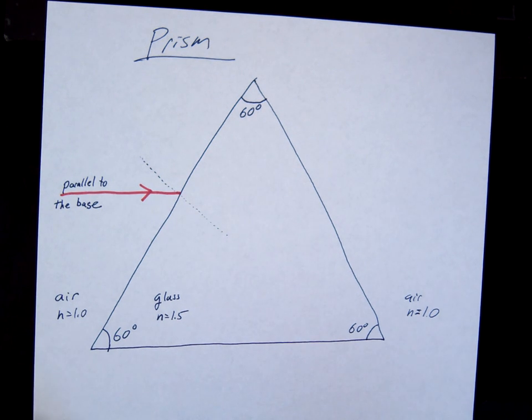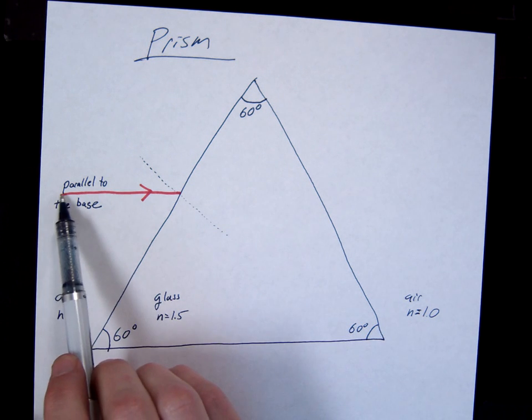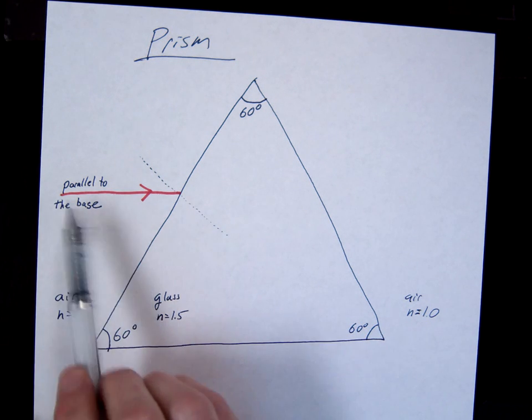Okay, so here's our prism. We have an equilateral triangle with all the same degrees. We have our laser being shot parallel to the base.